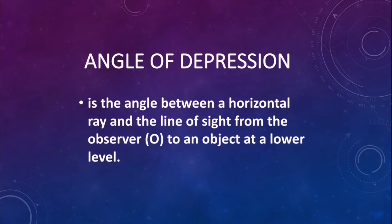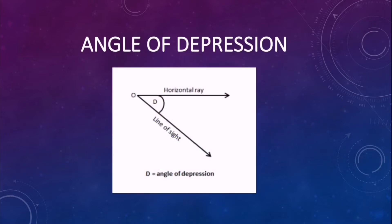Unlike the angle of elevation, the angle of depression is from the line of sight of the observer to an object below it. Let us take a look at the diagram shown. The horizontal line to the line of sight from the observer to the object below it—so the angle of depression there is represented by the angle D.